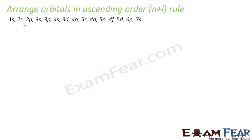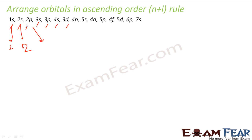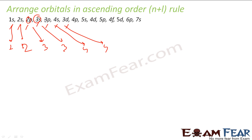For arranging orbitals, we follow the N plus L rule: 1s, 2s, 2p, 3s, 3p, 4s, 3d, and so on. For 1s: N=1, L=0, so N+L=1. For 2s: N+L=2. For 2p: N+L=3. For 3s: N+L=3 as well, but N=2 for 2p and N=3 for 3s, so 2p is taken as lower energy. For 3p: N+L=4. For 4s: N+L=4 also, but N=3 for 3p and N=4 for 4s, so 3p is lower energy. This is how the N plus L rule determines the order.